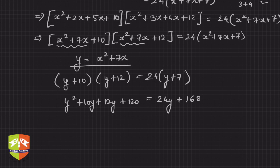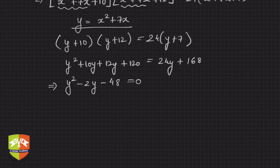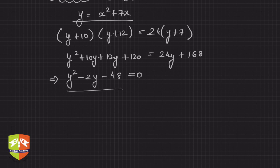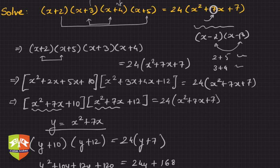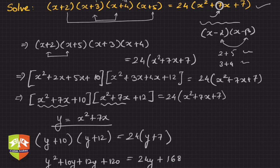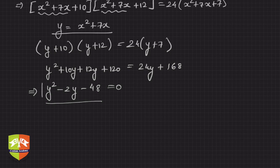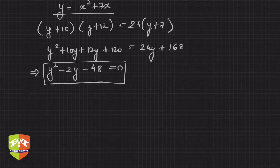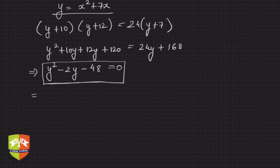So y² and then 10y+12y is 22y minus 24y is minus 2y, and this will be reduced to minus 48 is equal to 0. Can you see we started from an ugly looking, very frightening equation, but now it appears to be a very simplistic, very beautiful equation which is inviting to solve.